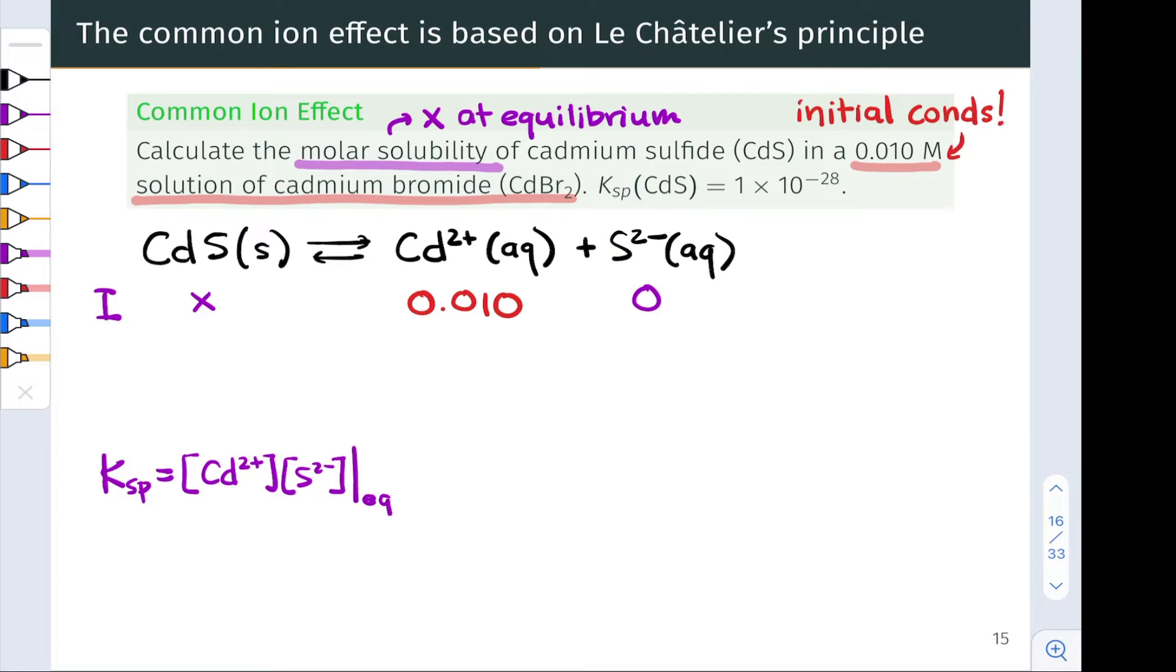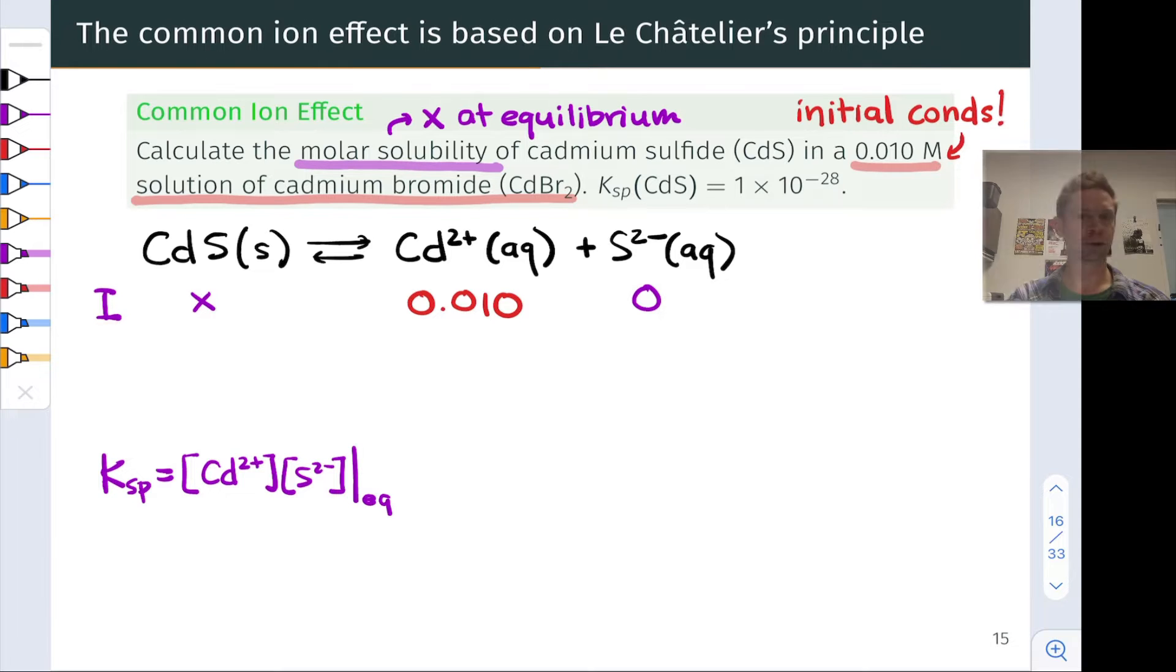Zero sulfide at this point, and we're imagining x moles per liter of cadmium sulfide solid that we've just thrown in the solution. You've got to imagine we haven't turned on this solution just yet. This is the initial condition where we've got some mass of cadmium sulfide, and we're interested in the amount of that mass that goes into solution per liter of solution.